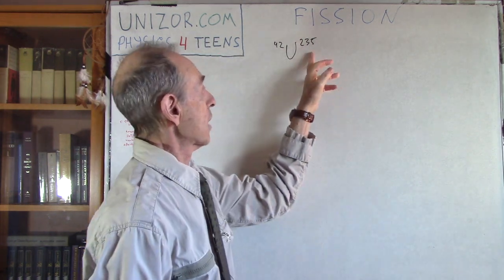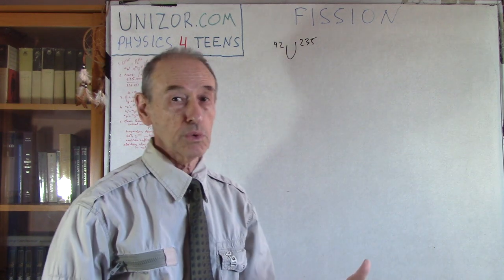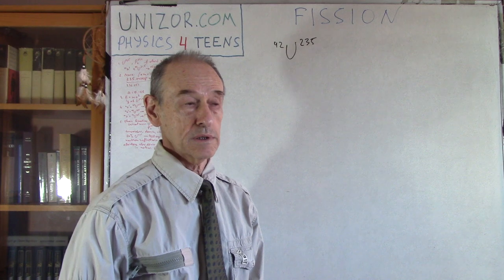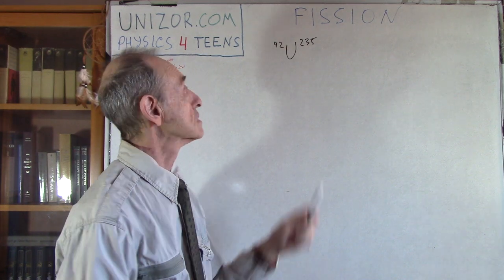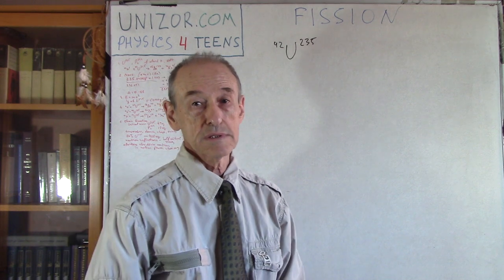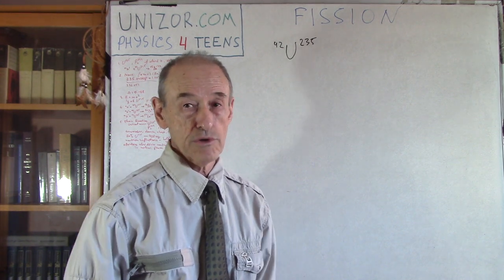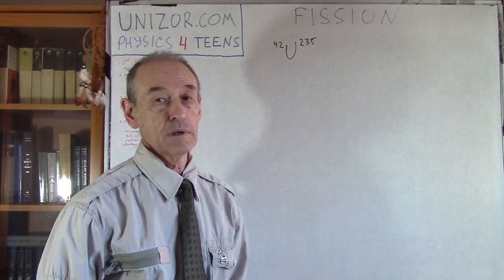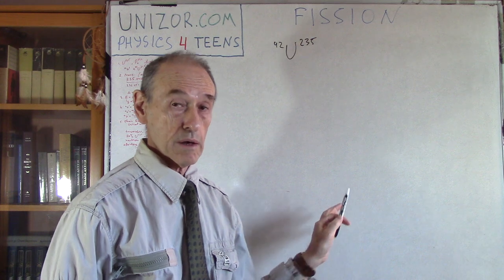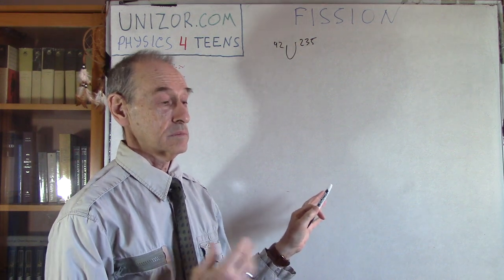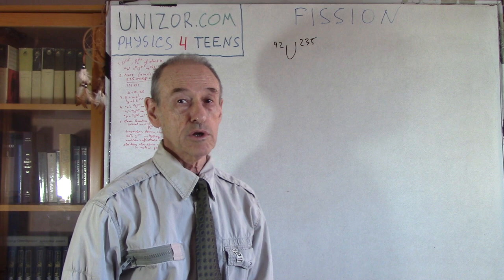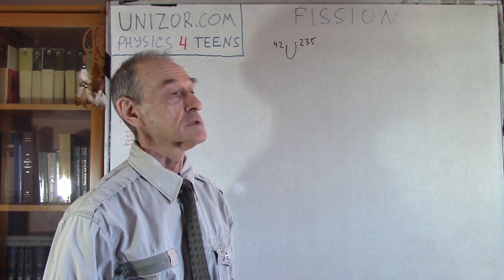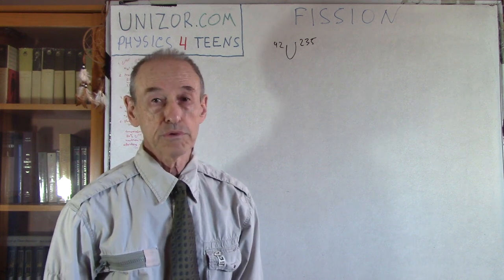The atomic number is 235, that's the total number of particles in the nucleus, protons plus neutrons. And this is the protons, the positive charge which the nucleus has. This particular isotope of uranium is rare. Much more frequently occurring is uranium-238, with more neutrons, the same 92 protons but more neutrons. So this particular isotope of uranium...